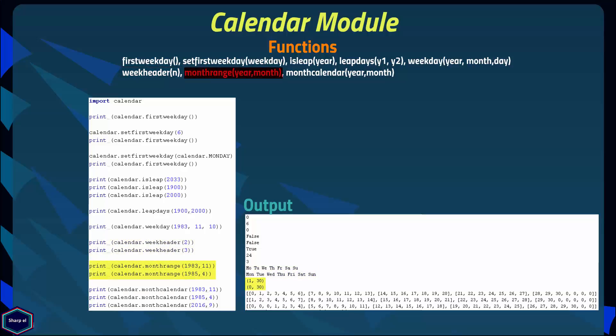The monthrange() function takes two arguments — year and month — and it returns a tuple containing the first weekday of the month and the total number of days in that month. For example, the first weekday in November 1983 was Tuesday and there were 30 days. Similarly, in April 1985 there were 30 days and the first weekday was Monday.